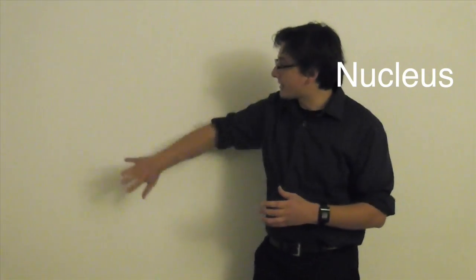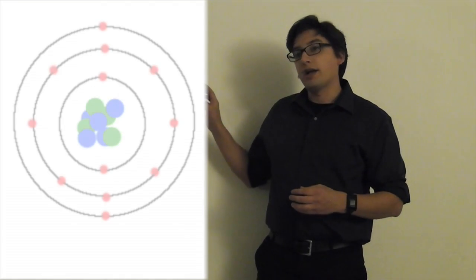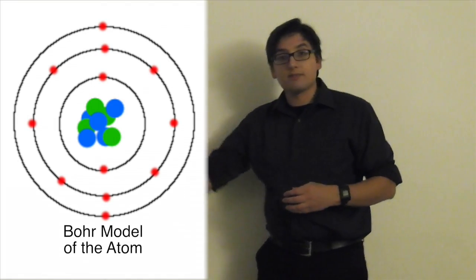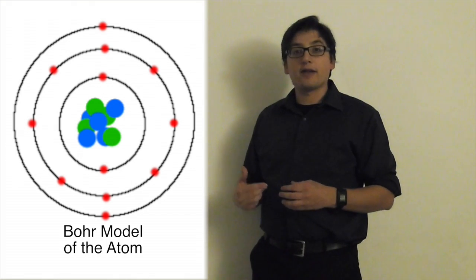So now the protons and neutrons are in the center of the atom. It's called a nucleus. Now we often draw it, here let's go ahead and erase a little bit of our, okay, let's make a little whiteboard here. All right. So, often in, you'll see what's called the Bohr model.